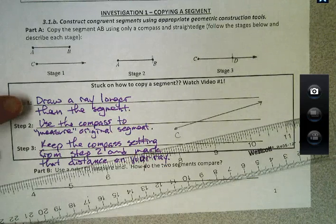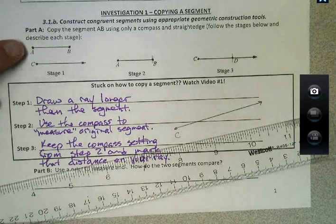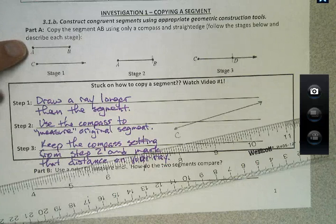So now that's step 1, draw a ray that's longer than the segment. I'm pretty sure my ray is longer than segment AB up here.